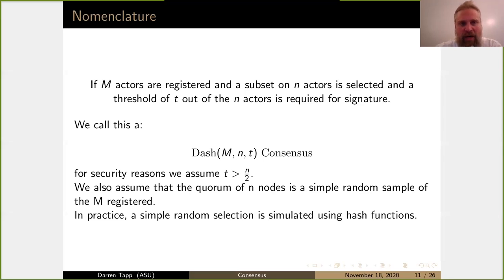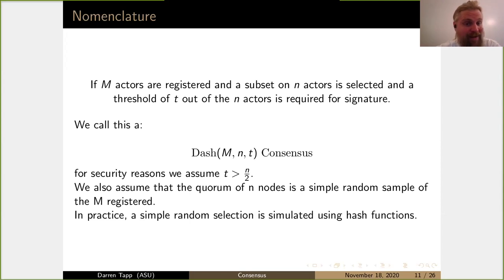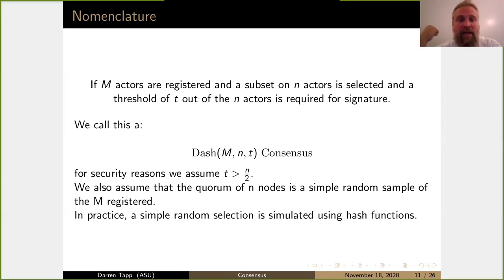One thing that's kind of annoying about the security analysis of this type of consensus is that it actually depends on the number of actors that are registered, the number of actors selected in a quorum, and a threshold. A subset of N actors is a quorum — lowercase n is the quorum size. When you do a threshold signature, you should have at least a simple majority, but there's no reason to stop there — you can make the threshold 60%, 70%, or 80% of actors. That choice of threshold affects the security level. The security level depends on the whole number of registered actors M, the quorum size N, and the threshold.